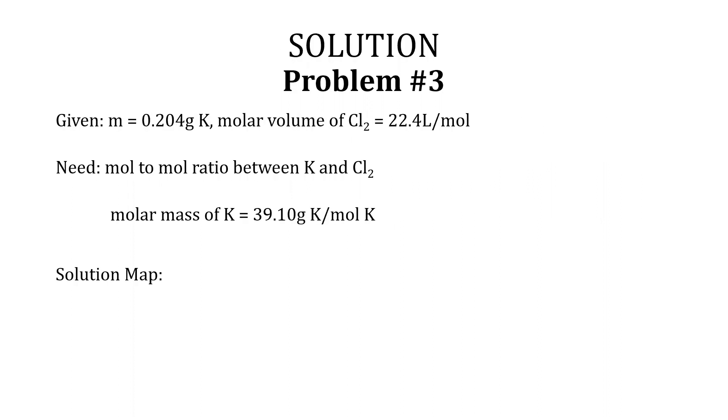Given that the mass is 0.204 g of K and the molar volume of Cl2 at STP is 22.4 liters per mole of Cl2, one needs the mole ratio between Cl2 and K, which is 1 mole of Cl2 over 2 moles of K. Also, the molar mass of K is needed, which is 39.10 g of K per 1 mole K.